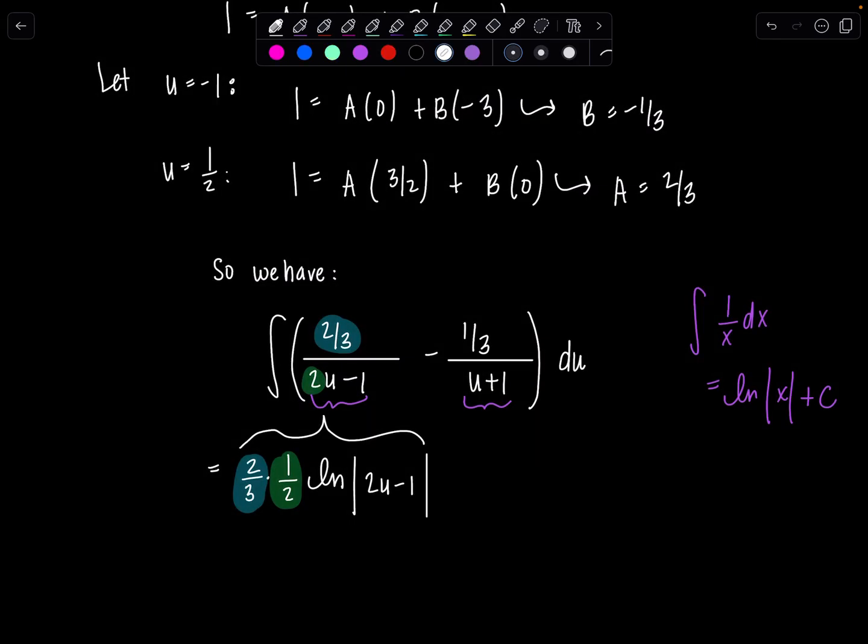Okay, then the next term we're just going to have minus 1 third. This one's easier. Natural log absolute value u plus 1. And then now let's put plus c on everybody.